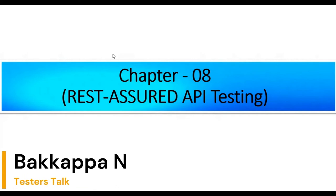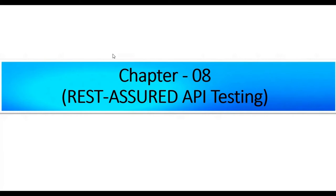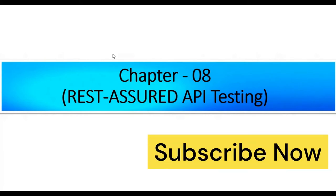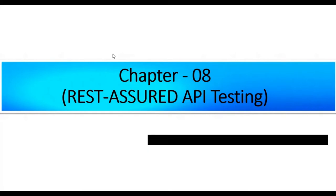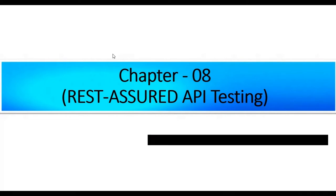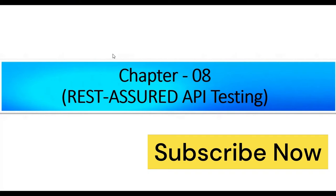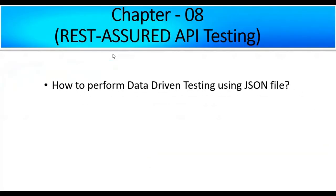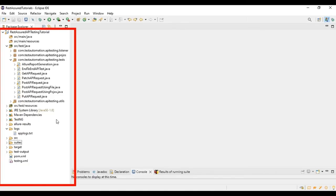Hey, hi friends, this is Bakappa. Welcome back to Tester's Talk channel. In the previous REST Assured API testing tutorial, I discussed how to configure Allure Report and generate the Allure Report for REST Assured API testing. In this Chapter 8 of REST Assured API testing tutorial, I will discuss how to perform data-driven testing using the JSON file.